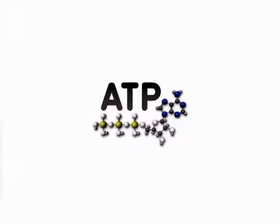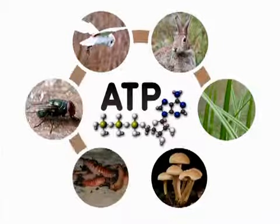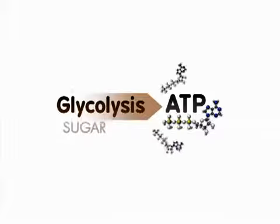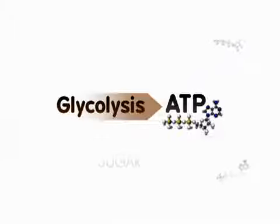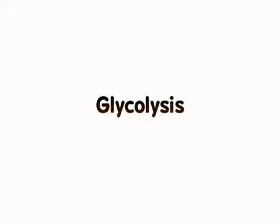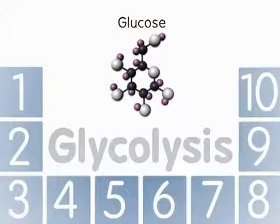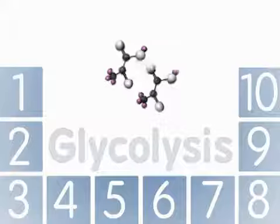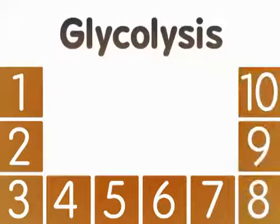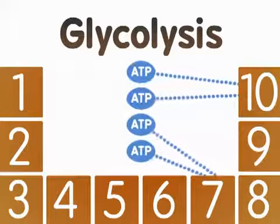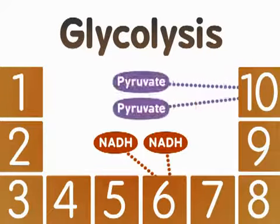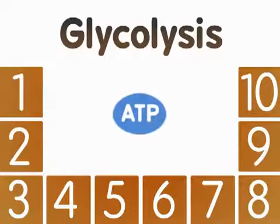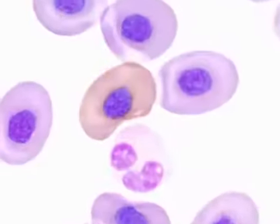ATP is the key energy molecule for all biological organisms. One source of ATP is glycolysis, a series of reactions that break down sugars while producing ATP. Glycolysis is a series of ten reactions that converts sugars, like glucose, into three-carbon molecules called pyruvate. Glycolysis is an important pathway for cells because it produces ATP and other products such as NADH and pyruvate that can be used later to produce more ATP for a cell. This key process takes place in the cytosol of the cell.